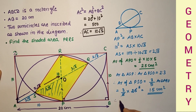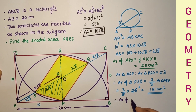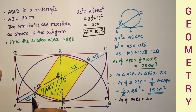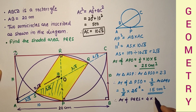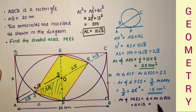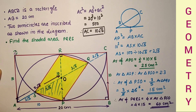Therefore, the area of parallelogram PQRS, the shaded area, equals 4 times the area of triangle PSO, which is 4 times 15, equal to 60 cm². That is the answer: the area of the shaded portion is 60 cm².